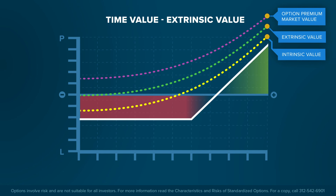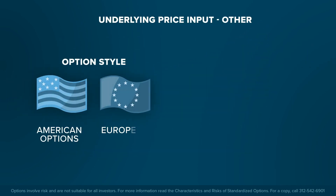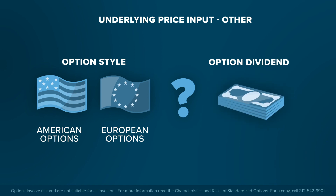An option's premium or market value is equal to its intrinsic value plus its extrinsic value. At option expiration, there is no extrinsic value remaining, and so the option's market value will be equal to its intrinsic value. Two other factors that could affect an option's price are option style and dividends.